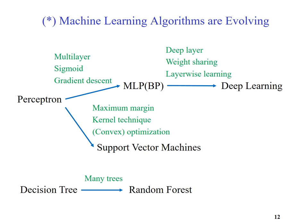We have learned many algorithms so far — Perceptron, Neural Net MLP with backpropagation, Decision Tree, Random Forest, and now Support Vector Machines. Some of these algorithms are interrelated. One algorithm gets stuck at some point, then people come up with a breakthrough and it evolves into a different algorithm. This slide shows the example of this evolution process.